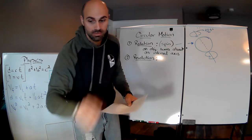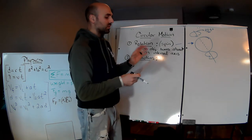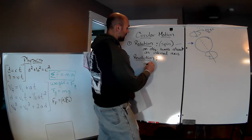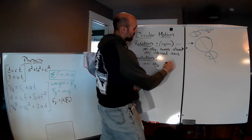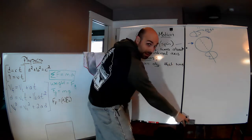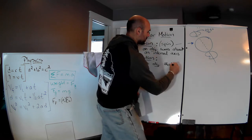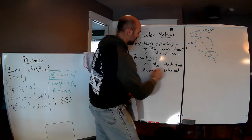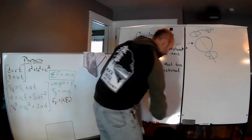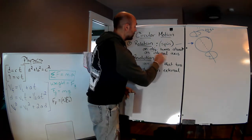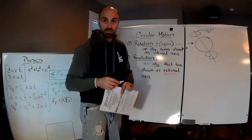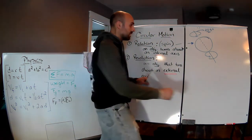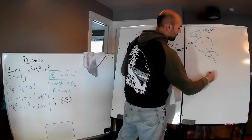The next term we're going to talk about is Revolution — again, not history. A revolution is an object turning about an external axis. So an object that turns about an external axis — those are the important words: internal versus external.